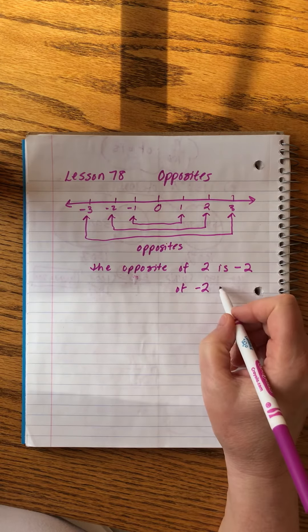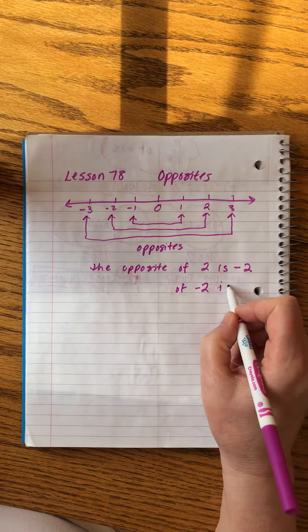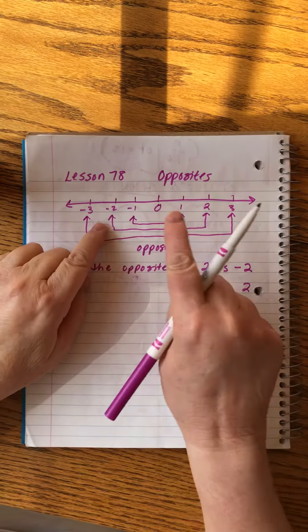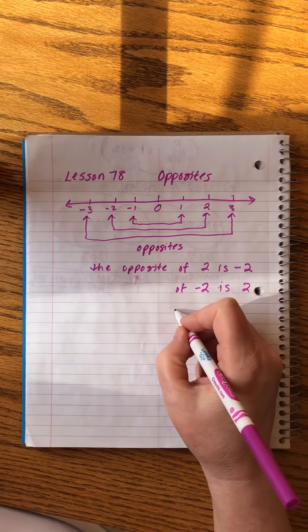The opposite of negative two, I'm not going to write this out every time because that will take us forever, you'll get bored and fall asleep. The opposite of negative two is positive two. That makes sense. Things just flip back and forth.